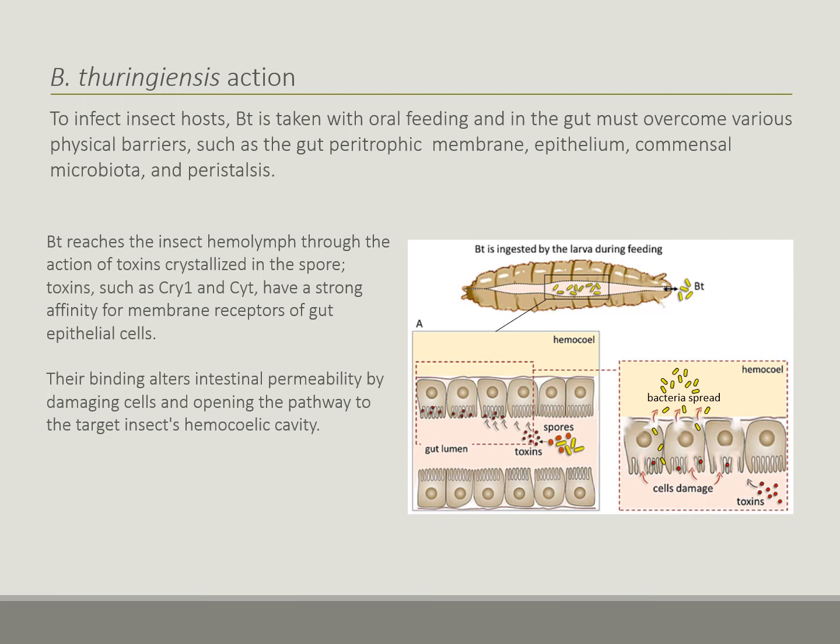Briefly, regarding the action of Bacillus thuringiensis: after oral uptake, the toxins produced by the spores of this bacterium interact with the epithelial cell membrane receptors in the gut of the host. These toxins, belonging to the Cry and Cyt families, damage the epithelium, alter its permeability, and form pores that open a pathway into the haemocelic cavity.